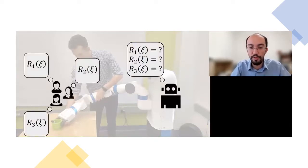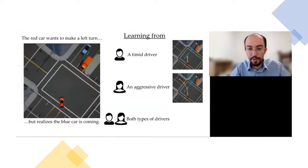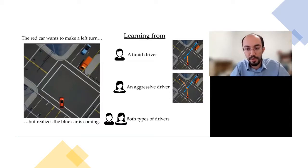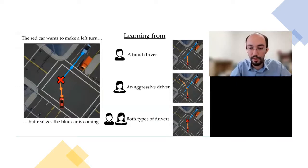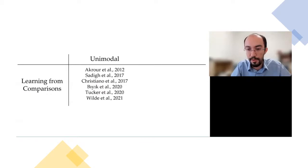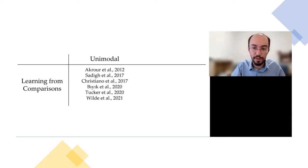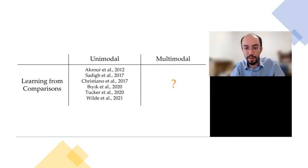In such settings, we cannot use standard learning from comparisons techniques because the car would try to find a policy close to both drivers and likely cause an accident. Although there has been much work on unimodal reward functions, learning multimodal rewards from comparisons had not been studied. Let me explain why multimodal rewards are more difficult with an example. The fetch robot wants to learn how and which shelf to place a banana.